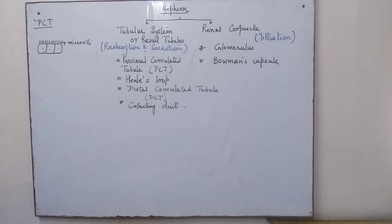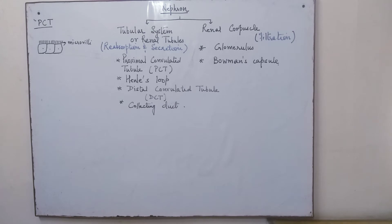The microvilli actually increase the surface area for reabsorption of essential nutrients. Whatever nutrients are required are reabsorbed in the PCT, and around 70 to 80 percent of various electrolytes are taken in. It also helps in maintaining the pH and the ionic balance, because most of the movement takes place through ions. There is selective secretion — certain substances are added and certain are removed — including hydrogen, potassium, and ammonium into the filtrate, while absorption of various other useful substances takes place.